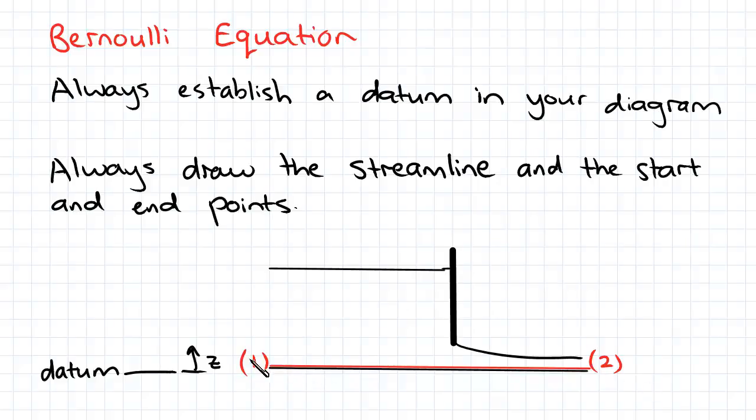In this example, this was a sluice gate. I drew a streamline along the bed and I numbered it 1 to 2.